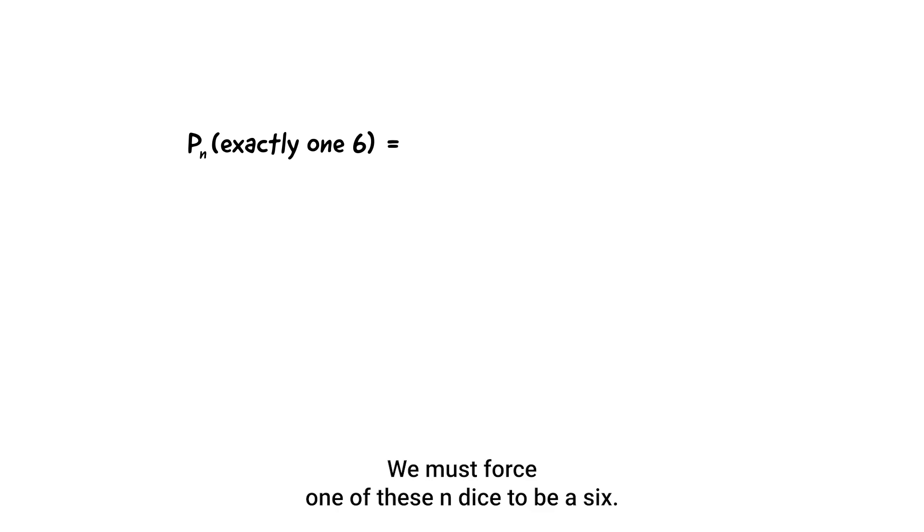We must force one of these n dice to be a six. We have n choices for which dice this is, and then there's a one sixth chance of it being a six. Then the remaining n minus one dice need to avoid six. There's a five on six to the power of n minus one chance of that.